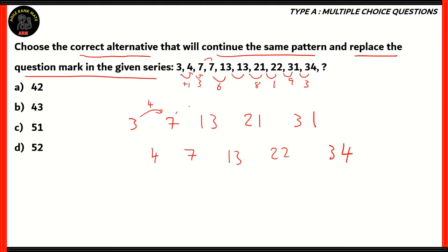For the odd-position series: 7 minus 3 is 4, 13 minus 7 is 6, 21 minus 13 is 8, 31 minus 21 is 10. As you can see, the differences are increasing even numbers. We have starting from 4, then 6, then 8, then 10. So there is a clear series between the odd positions.